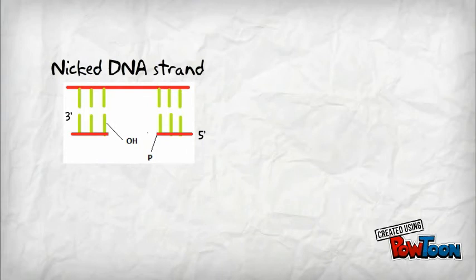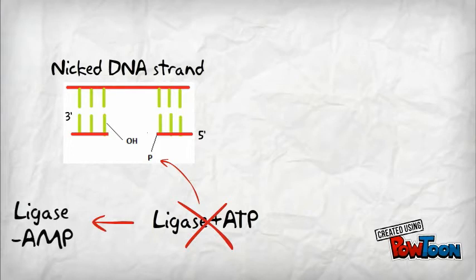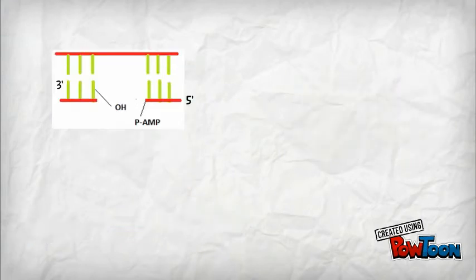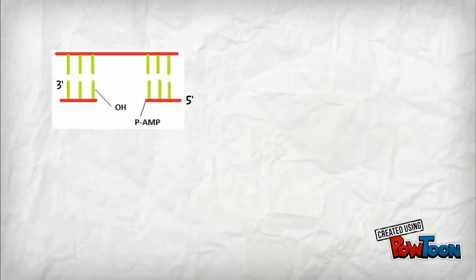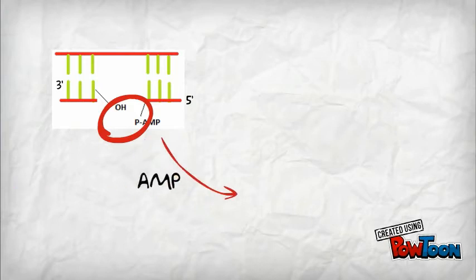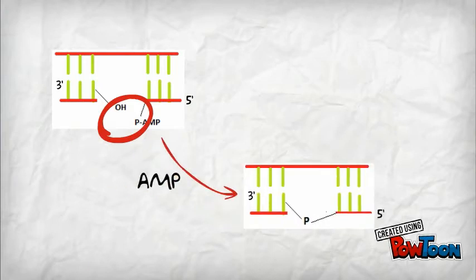In this process, enzyme ligase reacts with ATP to form a covalent ligase-AMP complex. It reacts with the phosphate on one side of the nick, transferring AMP to the phosphate group. The final stage is the attack group forming a new covalent phosphodiester bond and releasing AMP, then proceed to the packaging process.